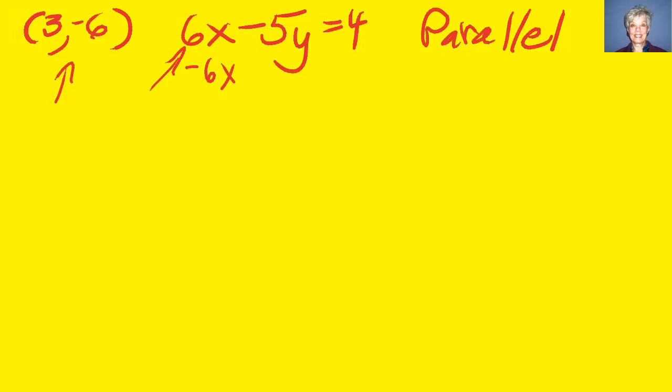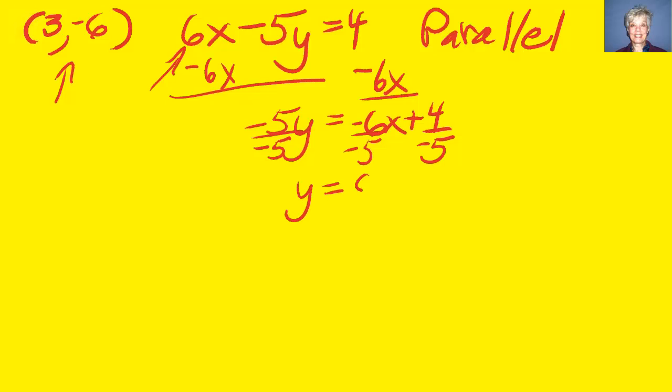Subtract 6x from both sides. That'll leave us negative 5y equals negative 6x plus 4, and then divide through by negative 5. What we'll get is y equals positive 6 fifths x minus 4 fifths.